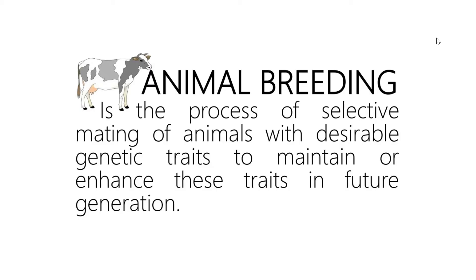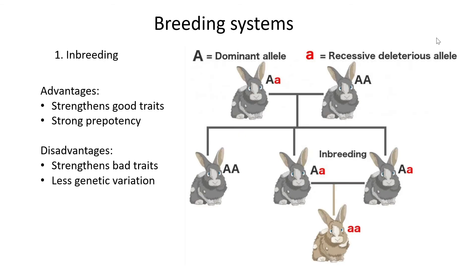We hope that those characteristics can genetically be passed on. We allow those individuals with the characteristics we see to mate, and then hopefully they pass on those genes to their offspring so we can see those characteristics in the next generation. Now we're going to look at specific types of breeding systems. The first one we're all familiar with is inbreeding.